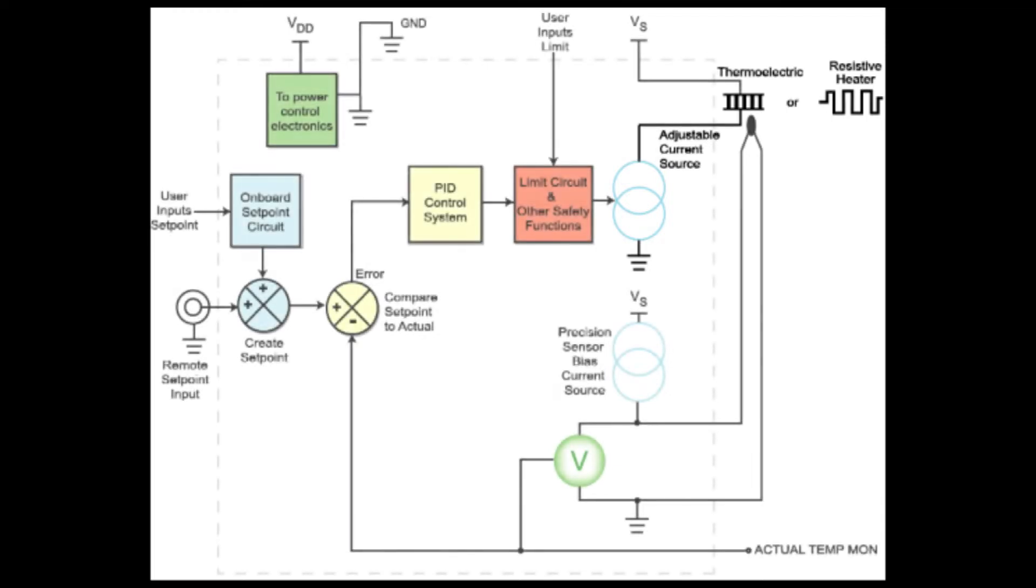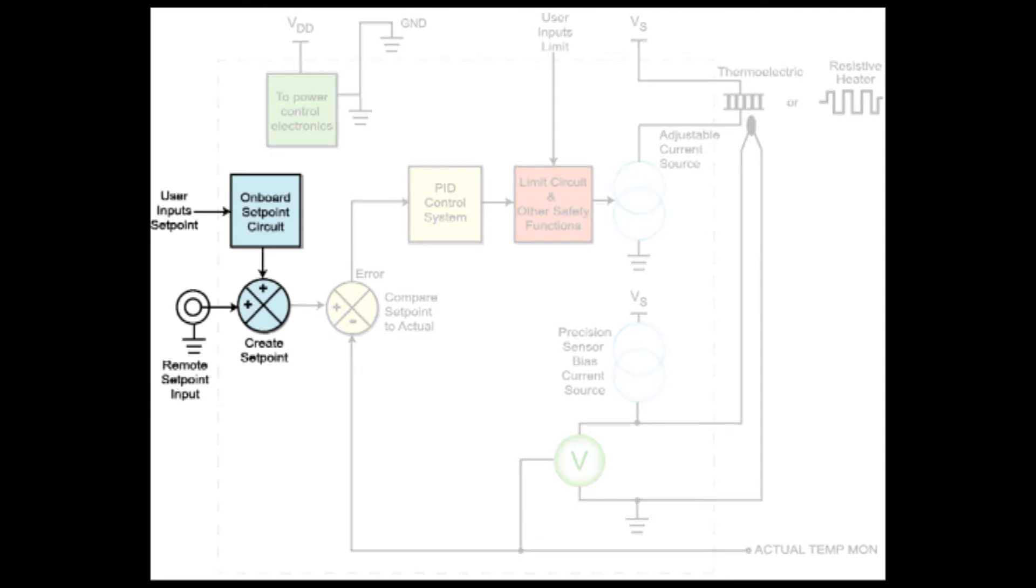The temperature setpoint is an analog voltage into the system and dictates where the controller will maintain the temperature. It can be created by a combination of onboard trim pot adjustment and the remote setpoint input.